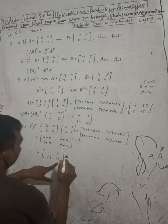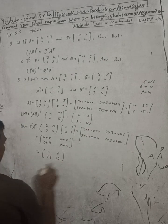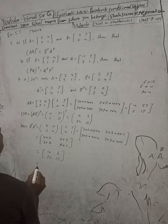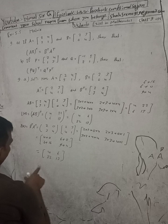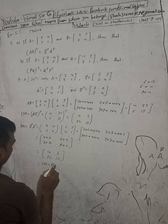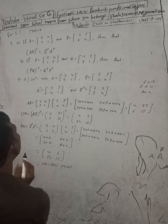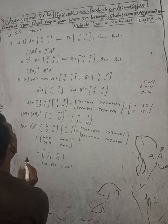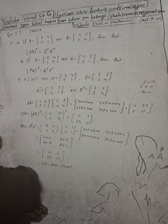LHS equals RHS, both giving [4,6; 22,13]. Therefore (AB) whole transpose = B transpose × A transpose is proved. That's the solution of 9a. Now I will solve 9b in the same video.